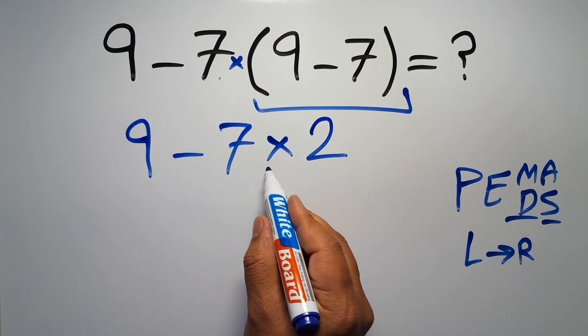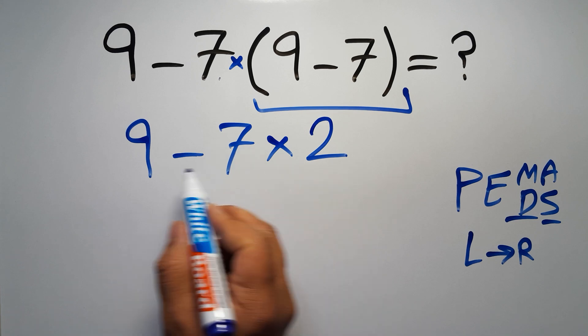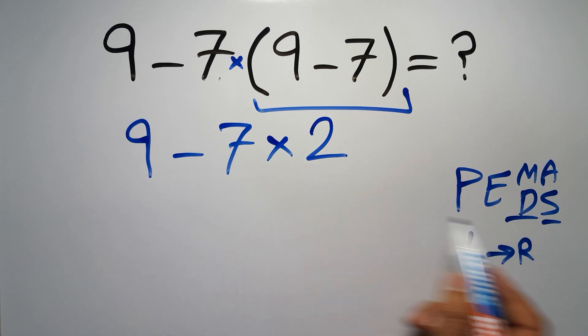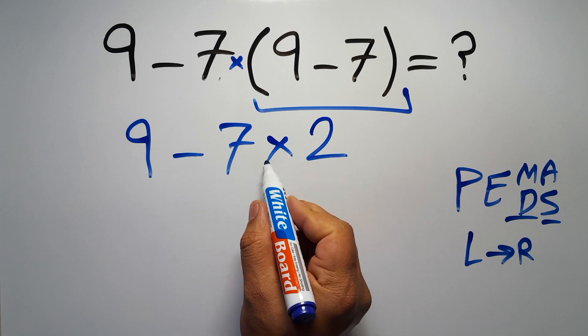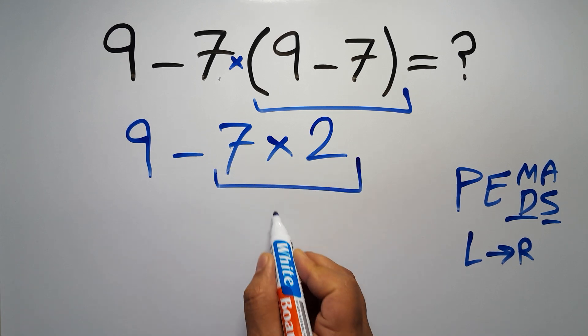Now we have one subtraction and one multiplication. According to the PEMDAS, multiplication has higher priority than subtraction, because multiplication comes before subtraction. So here, first we have to do this multiplication. 7 times 2 equals 14.